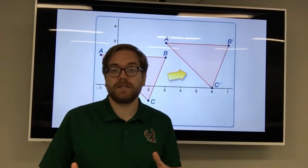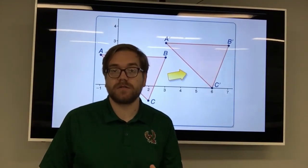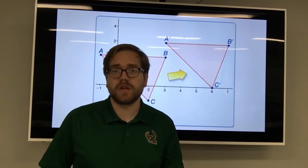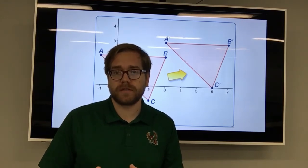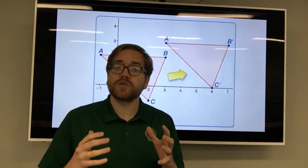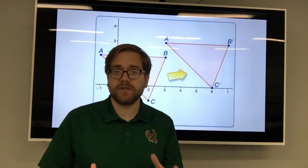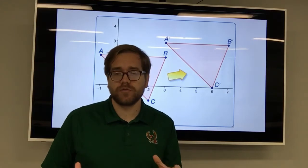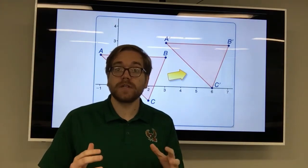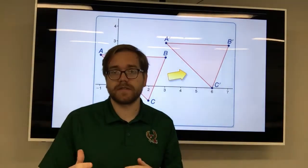In the first three lessons of this unit, we discussed how each of the transformations — translations, reflections, and rotations — are all rigid motions. Rigid motions mean that when we transform these figures, the lengths, angles, and shape of the figures don't change at all. In this lesson, we'll look at how this idea of rigid motions is related to congruence.